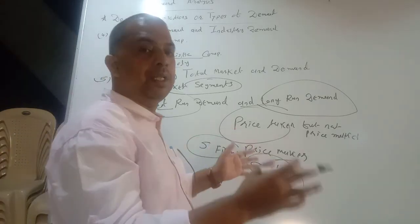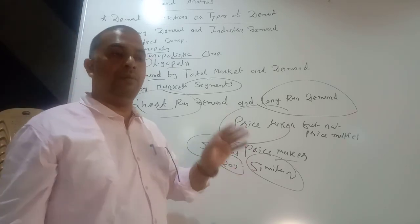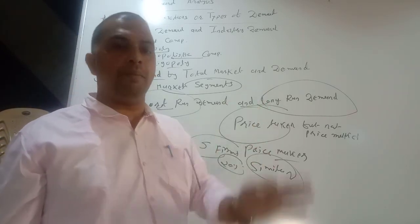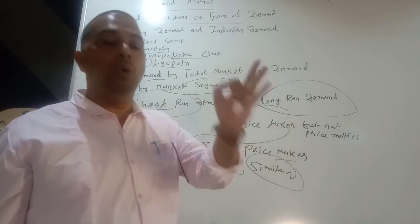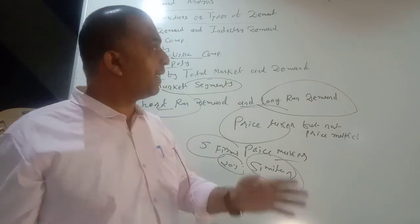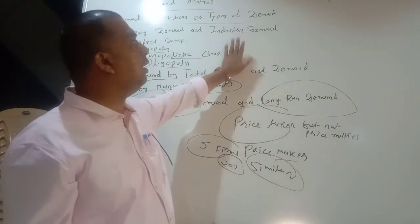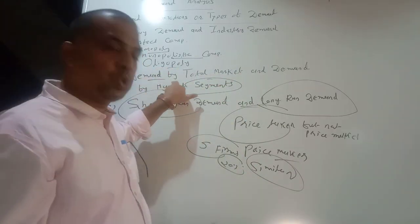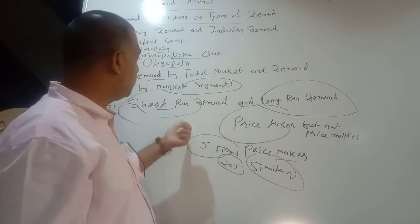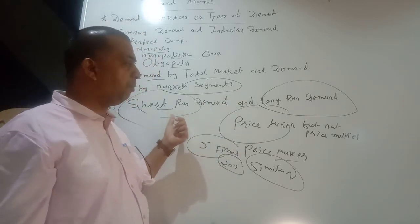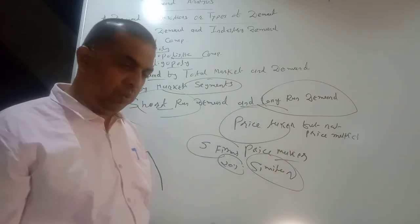To summarize: company demand refers to demand for a particular company or brand — for example, Colgate toothpaste or Maruti car. Industry demand refers to demand for the whole industry. Demand by total market is the total demand for the product, while demand by market segment is demand in different regions or segments. Short-run demand covers perishable goods, and long-run demand covers durable goods. Thank you very much.